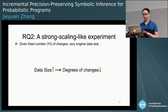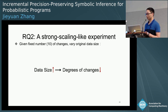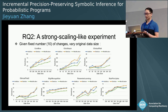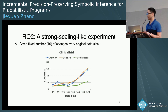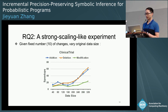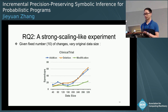For RQ2, we fix the number of changed data points at 10 and vary the original data size. As data size increases, the degree of change decreases, so the speedup increases accordingly. For each configuration — addition, deletion, or modification — the speedup increases as data size grows from 40 to 320. The speedup under modification is about half that of addition or deletion, since modification is treated as a combination of both.